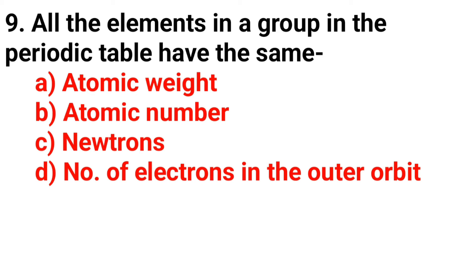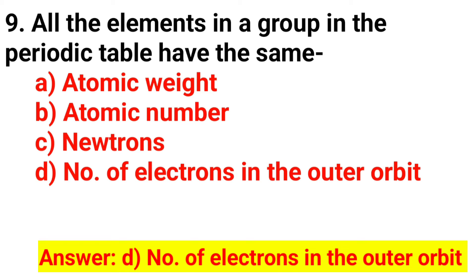Question number 9: All the elements in a group in the periodic table have the same? The answer is option D, number of electrons in the outer orbit.